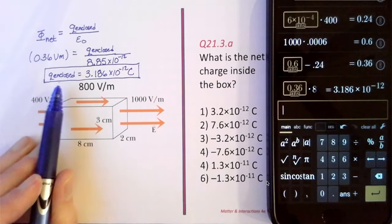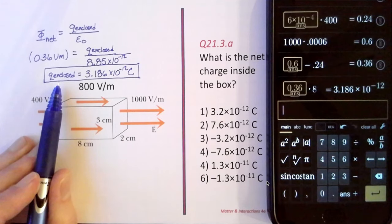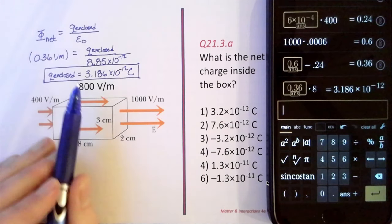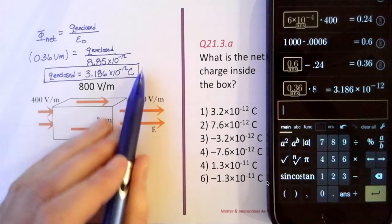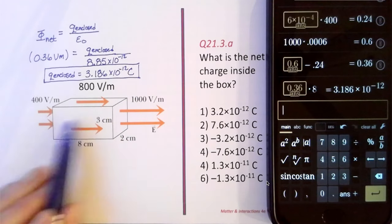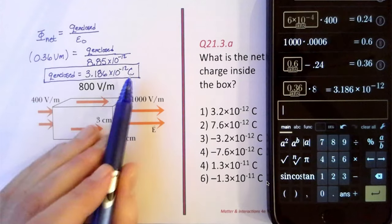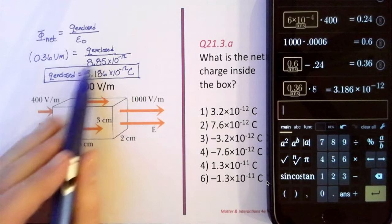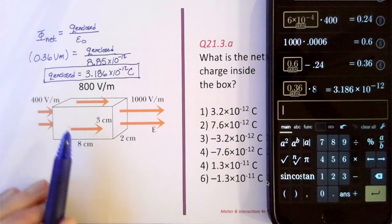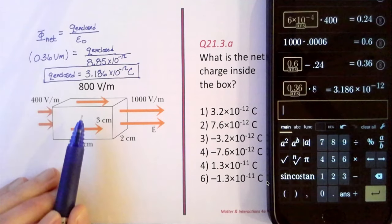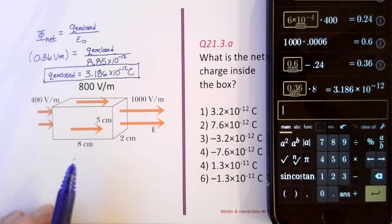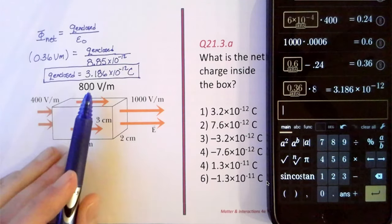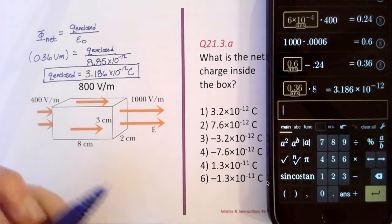And also this is the net electric charge that's enclosed. It could be one charge with that much, or it could be many different charges in some arrangement whose net is that amount. We don't know. We just know how much net charge is inside that surface. That yields choice one.